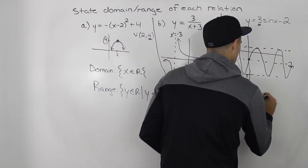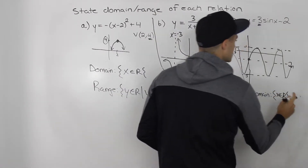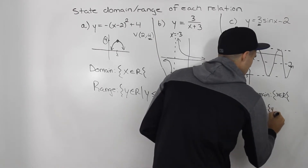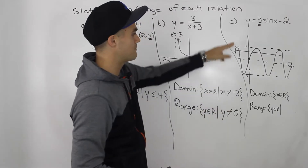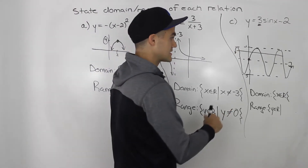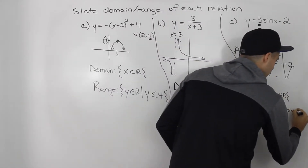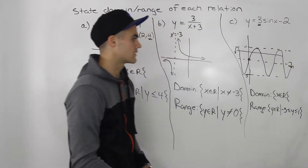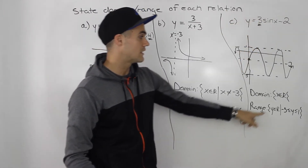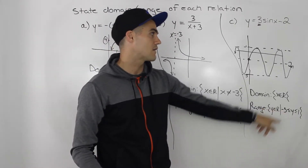With periodic functions like sine x or cos x, all you need to know is where the max and min are — that's the c value (the axis) plus or minus the amplitude. Now for domain and range: the domain is always x is an element of real numbers, since the wave goes on forever with no restriction on x. The range is y is an element of real numbers, but y has to be greater than or equal to negative 5 (the min) and less than or equal to 1 (the max).